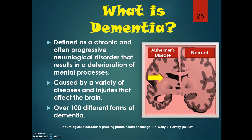What is dementia? Dementia is defined as a chronic and often progressive neurological disorder that results in a deterioration of mental processes, caused by a variety of diseases and injuries that affect the brain. Currently there are over 100 different forms of dementia. In the diagram shown, a patient with Alzheimer's disease has enlarged ventricles and shrinking of the brain compared to a normal brain.